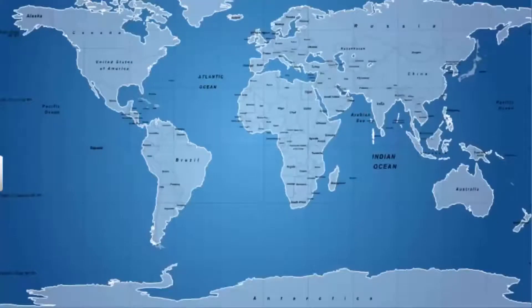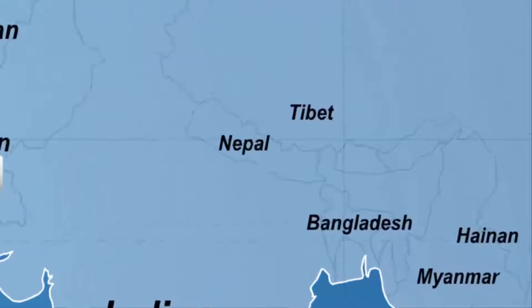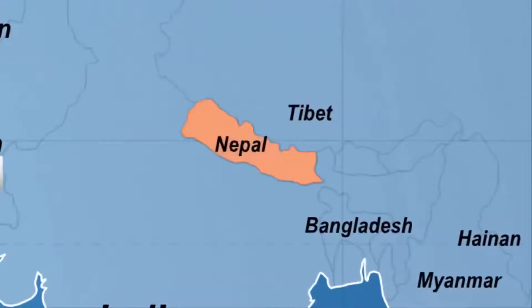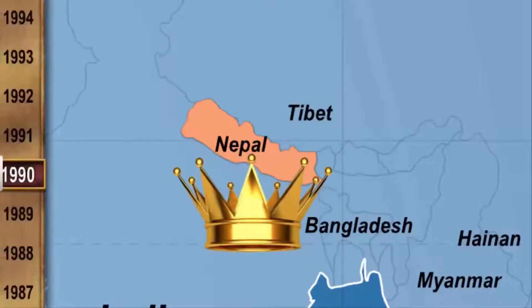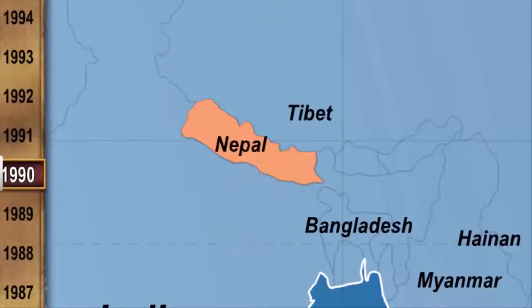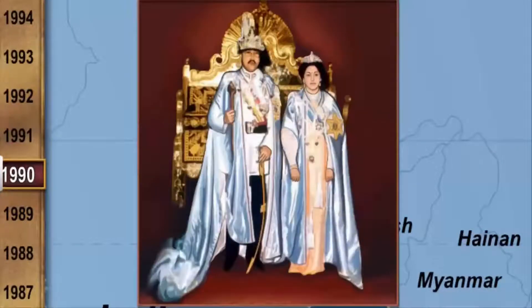People's movements have also brought a change to introduce democracy in a non-democratic country like Nepal. For a long time, Nepal had been a monarchy. In 1990, Nepal became a democracy where the king formally remained head of the state and the real power was exercised by elected representatives.